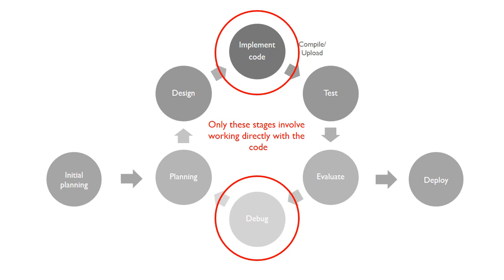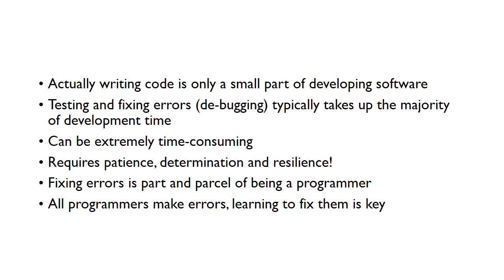Actually, only two stages involve writing the code: when you're implementing the code and when you're debugging. These are the only two parts where you're directly working with the code. A lot of people think writing the code is the main part of software development, but it's actually a very small part. Testing and fixing errors — what we call debugging — takes up the majority of development time.